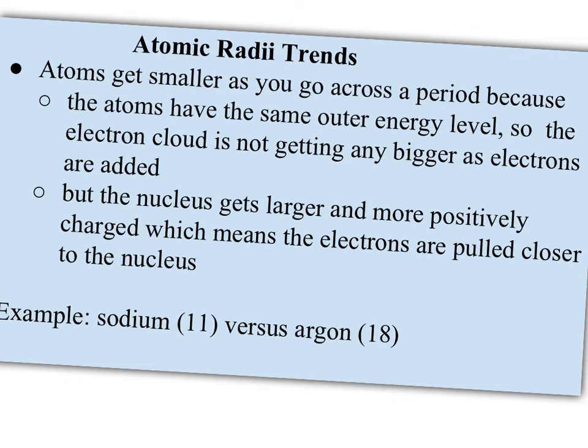But think about the structure. The atoms have the same outer energy level, you're not at another energy level, so the electron cloud isn't getting any bigger. You are adding more electrons, which will repel each other somewhat more. But a much bigger deal is that the nucleus is getting larger and larger and more positively charged. And so that means the electrons are going to get pulled closer to the nucleus.